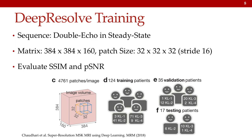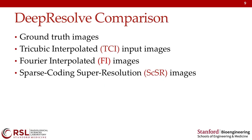All subjects used in training, validation, and testing have a nice distribution of Kellgren-Lawrence grades from 1 through 4, which correspond to the severity of osteoarthritis activity in the knee, with grade 4 being the highest level. This means our training dataset has seen not only healthy knees but also a wide range of pathologic knees, so the network is minimally biased in that regard. For comparisons, we compare our super resolution outputs to the ground truth datasets as well as tricubic interpolated and Fourier interpolated images, since many DICOM viewers and scanners use such interpolation methods to increase perceived image quality.